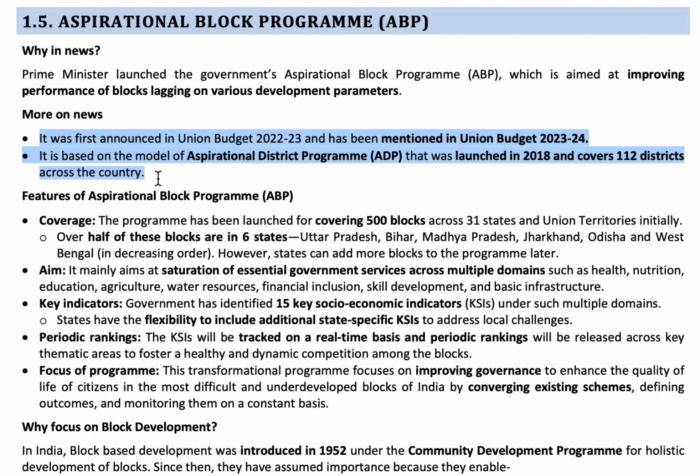At present, at the initial level, 500 blocks have been selected, and afterwards more aspirational blocks will be added for development activities. Under this program, they mainly promote health, nutrition, education, agriculture, water resources, financial inclusion, skill development, and basic infrastructure. Implementing this program from the block level helps authorities focus on underdeveloped areas, leading to improvement in literacy, health, transportation, agriculture, and more.